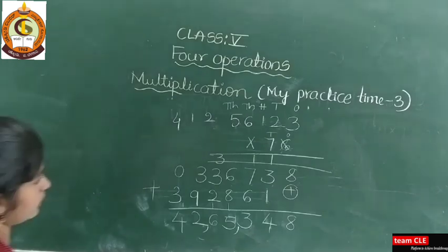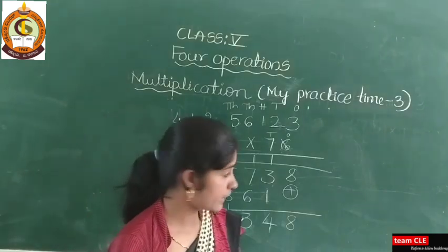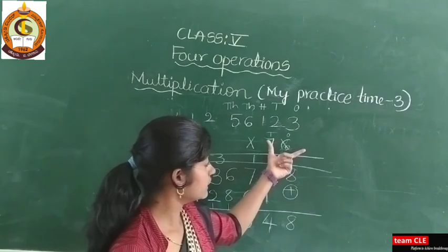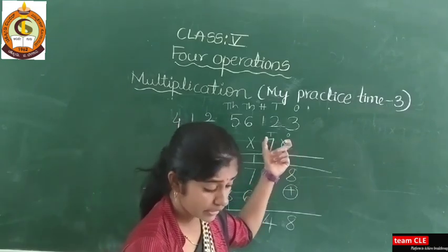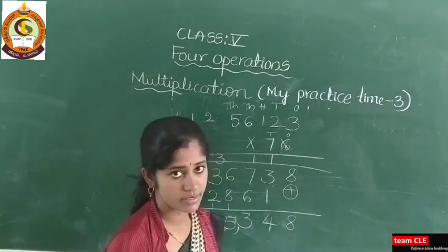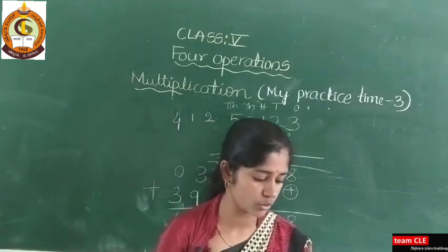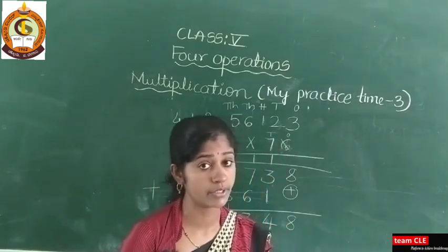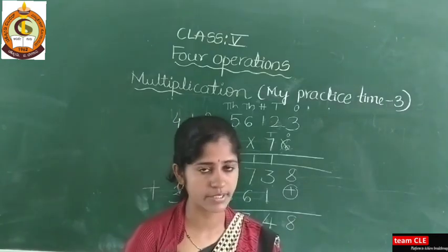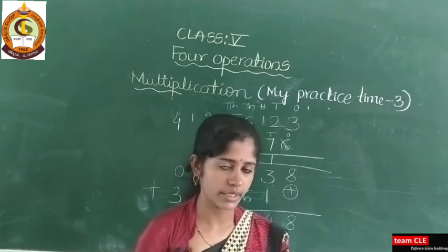I hope this is clear to you — how to solve these examples. In the next class, here only two digits were used. You need to try with three digits and four digits. If you practiced these examples, then only you will be able to solve that kind of examples. So please keep practicing. I hope this class is clear to you. Thank you.